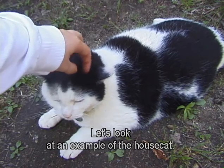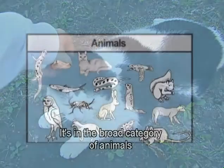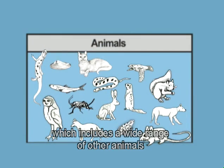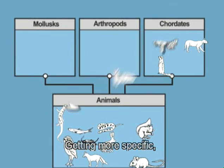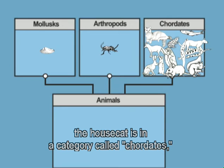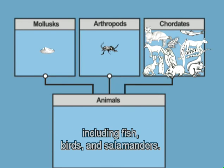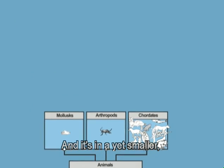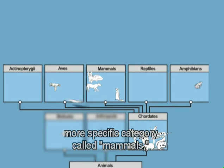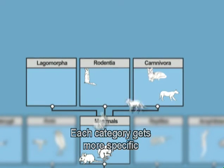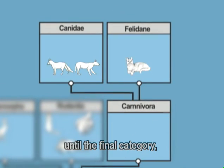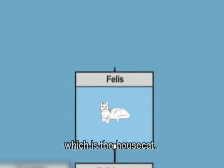Let's look at an example of the house cat. It's in the broad category of animals, which includes a wide range of other animals such as frogs, clams, worms, and even humans. Getting more specific, the house cat is in a category called chordates, which are animals that have backbones, including fish, birds, and salamanders. And it's in a yet smaller, more specific category called mammals, which are animals that have fur and tend to bear live young. Each category gets more specific until the final category, called sylvestris, which is the house cat.